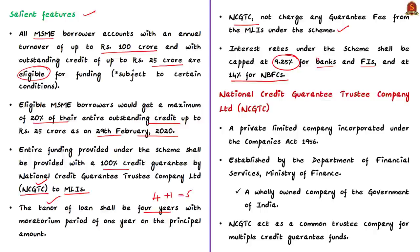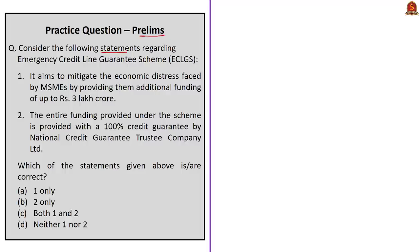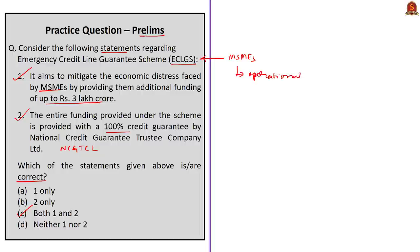The tenor of the loan shall be 4 years with a moratorium of 1 year on the principal. NCGTC will not charge any guarantee fee from member lending institutions. Interest rates are capped at 9.25% for banks and financial institutions and at 14% for NBFCs. NCGTC (National Credit Guarantee Trustee Company Limited) is a private limited company incorporated under the Companies Act of 1956, established by the Department of Financial Services, Ministry of Finance, as a wholly owned Government of India company. It acts as a common trustee for multiple credit guarantee funds.